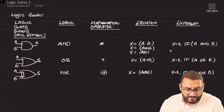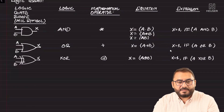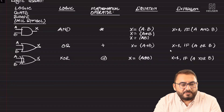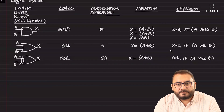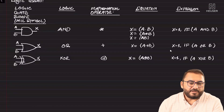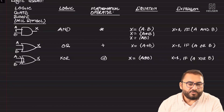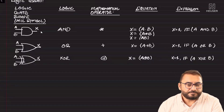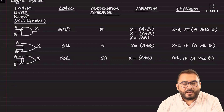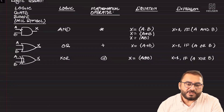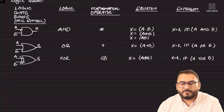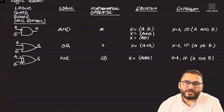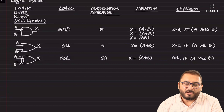Before we go any further, let us discuss the work of these three logic gates. For the AND gate, the input side is always on the left and the output side is always on the right. All gates except the NOT gate have two inputs and one output. The NOT gate has only one input.